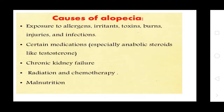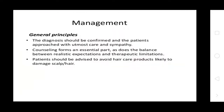Causes of alopecia include exposure to allergens, irritations, toxins, burns, injury, and infections. Certain medications, especially anabolic steroids like testosterone, chronic kidney failure, radiation and chemotherapy, and malnutrition are also causes.